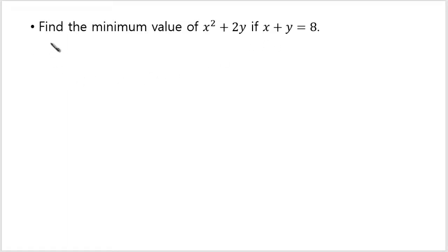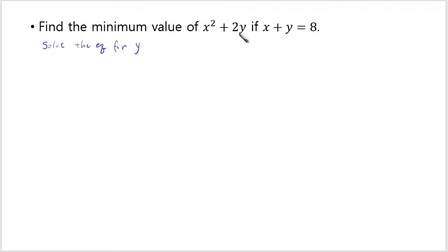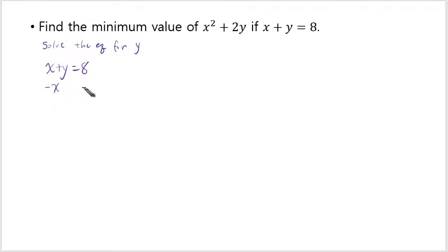The steps are always: first, solve the constraint equation for one variable. So let's say we solve for y. Once you solve the equation for y, you plug it into the target function to make it a function of a single variable, then use calculus to find the critical numbers and the minimum or maximum. So we have x plus y equals 8. Subtract x from both sides, and you get y equals 8 minus x.